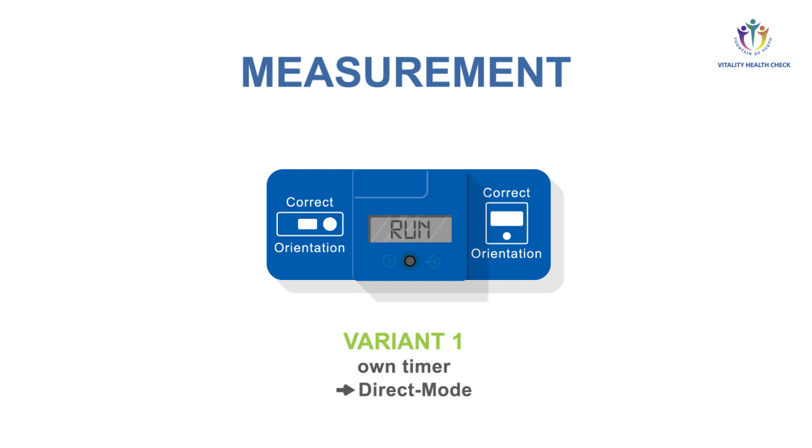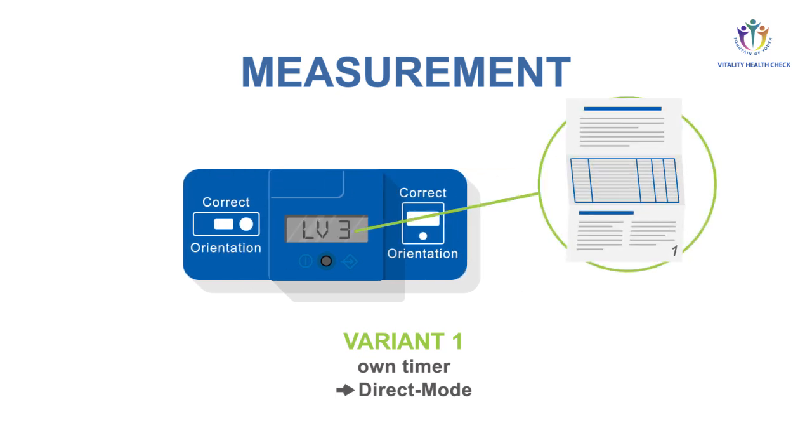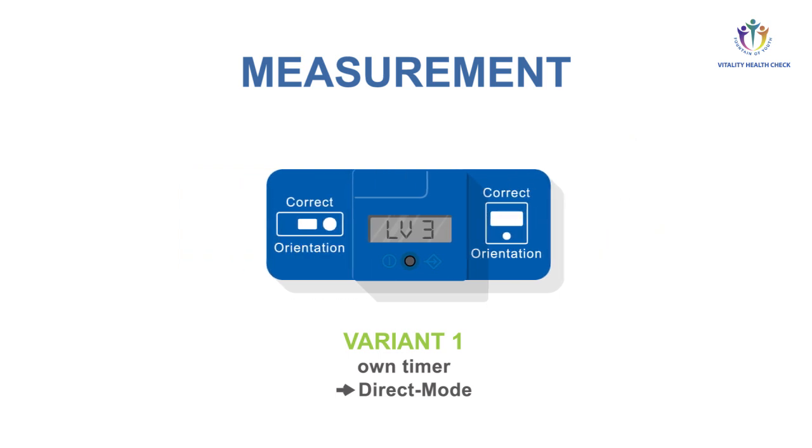In both variants, the quantification results appear on the display. A relative vitamin D level, level 1 to 6 is displayed. See evaluation table on page 1 of the instructions for use. Quantitative results are shown in nanogram per milliliter and in nanomole per liter.